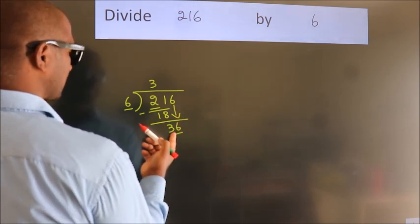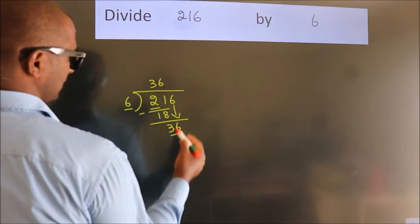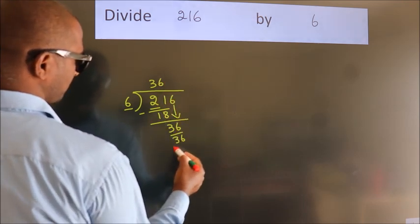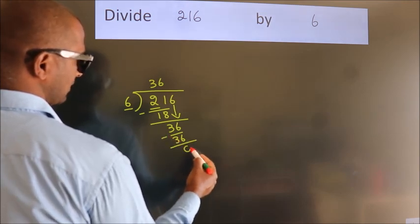When do we get 36? In the 6 table. 6, 6, 36. Now, we subtract. We get 0.